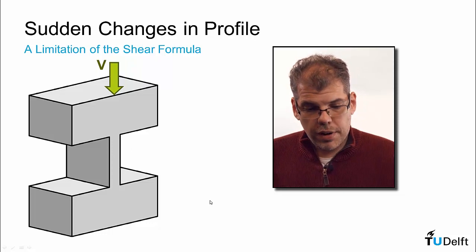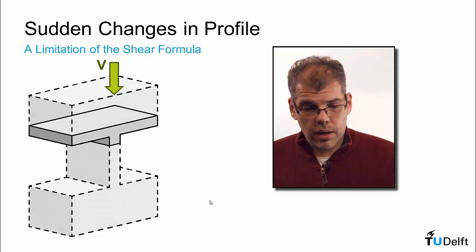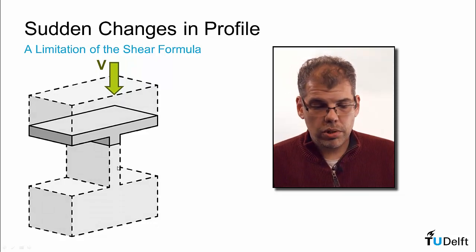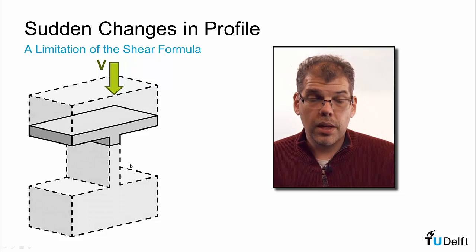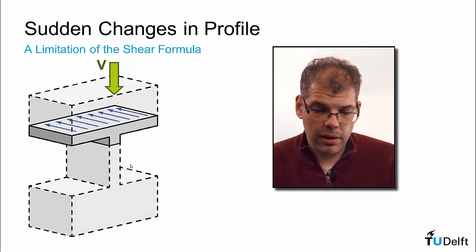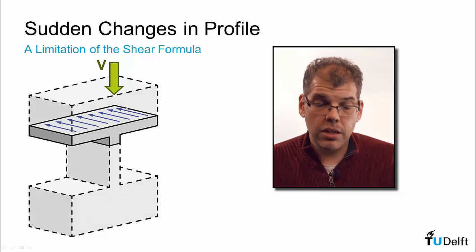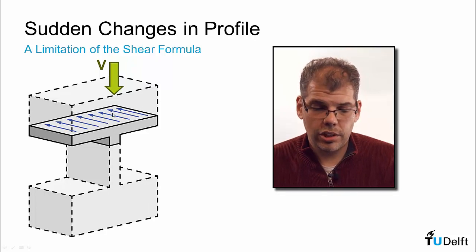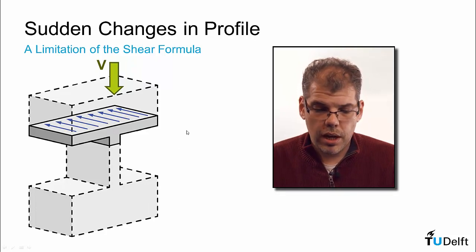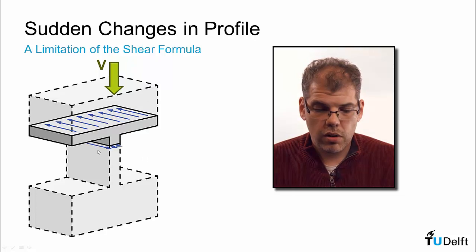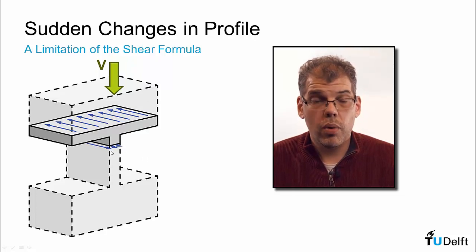If we section away a portion of the flange and a portion of the web and apply our shear formula, we would get that there has to be a uniform shear stress acting in the flange and a uniform shear stress over the small area of the web.